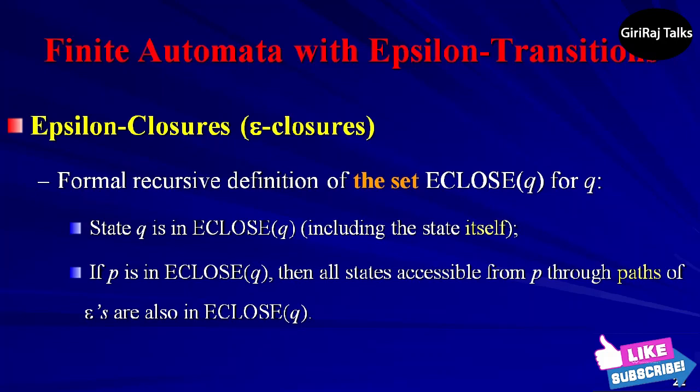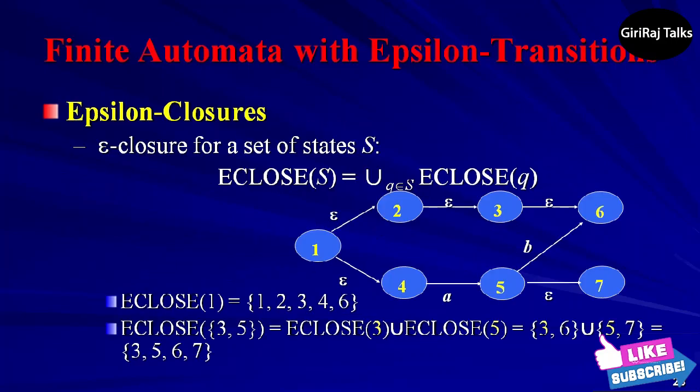Formally, we define the epsilon closure ECLOSE(Q). Let us take one example. Each state is its own epsilon closure with two exceptions. ECLOSE(Q0) = {Q0, Q1} and ECLOSE(Q3) = {Q3, Q5}. The reason is that there are only two epsilon transitions: one that adds Q1 to ECLOSE(Q0) and the other that adds Q5 to ECLOSE(Q3).